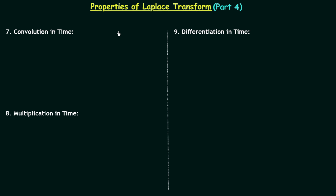In this lecture we will understand the next three properties of Laplace transform: convolution in time, multiplication in time, and differentiation in time. In property number 7 we perform convolution of two time domain signals, in property number 8 we perform multiplication of two time domain signals, and in property number 9 we perform differentiation of the time domain signal. In all properties we will observe what happens to the Laplace transform after performing the operations.